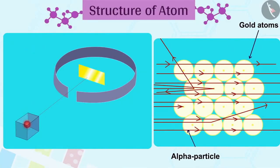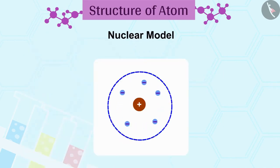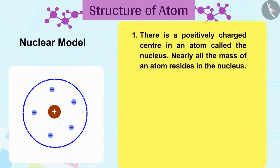Based on his experiments, Rutherford presented the nuclear model of the atom. 1. There is a positively charged center in an atom called the nucleus. Nearly all the mass of an atom resides in the nucleus.